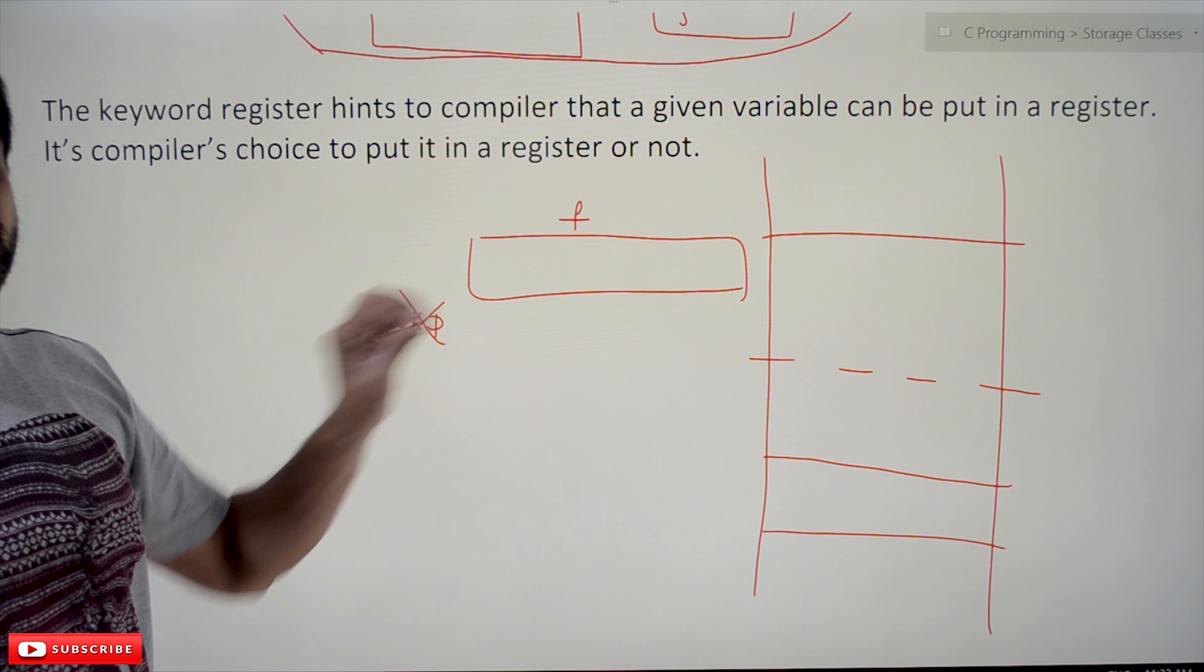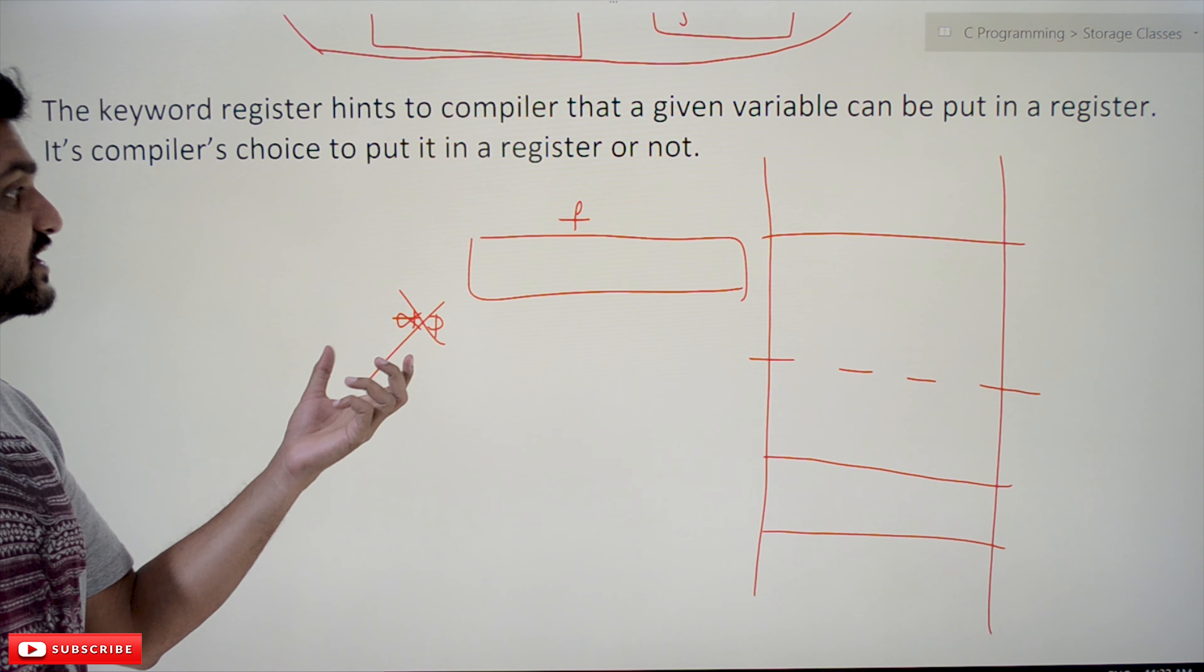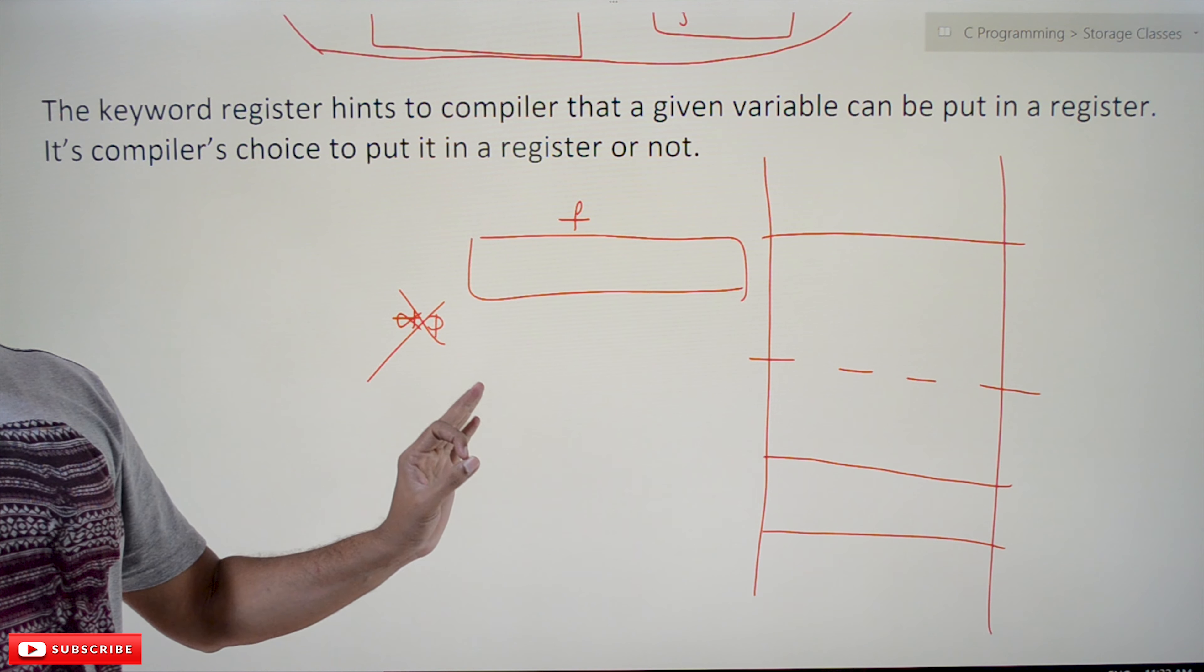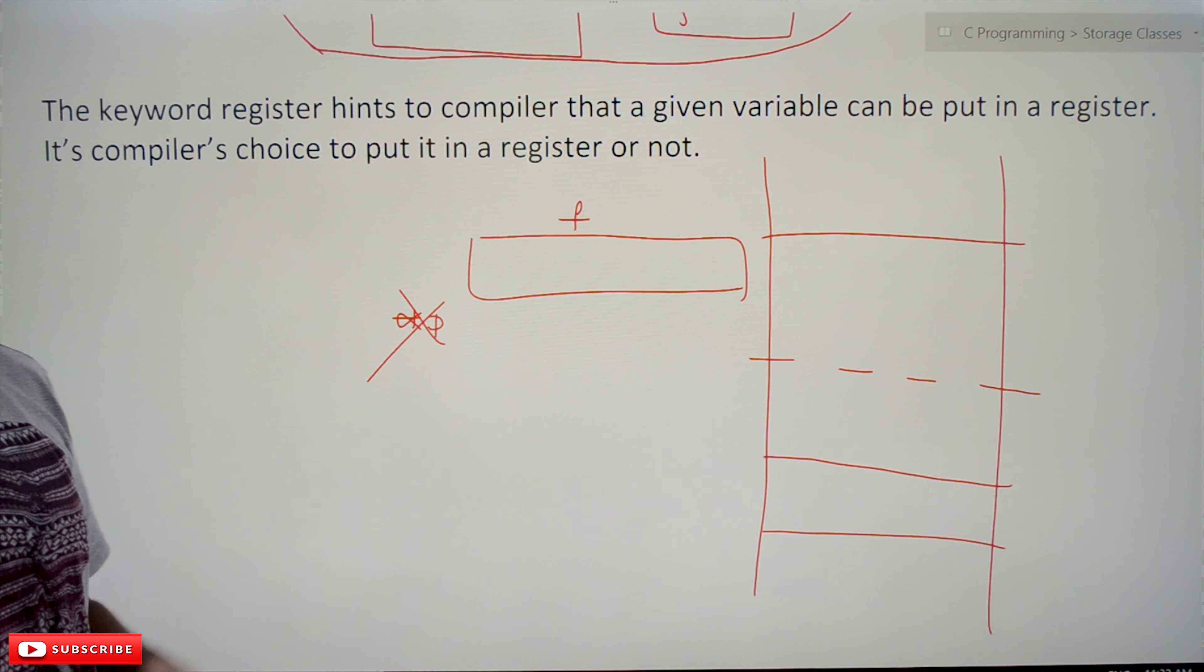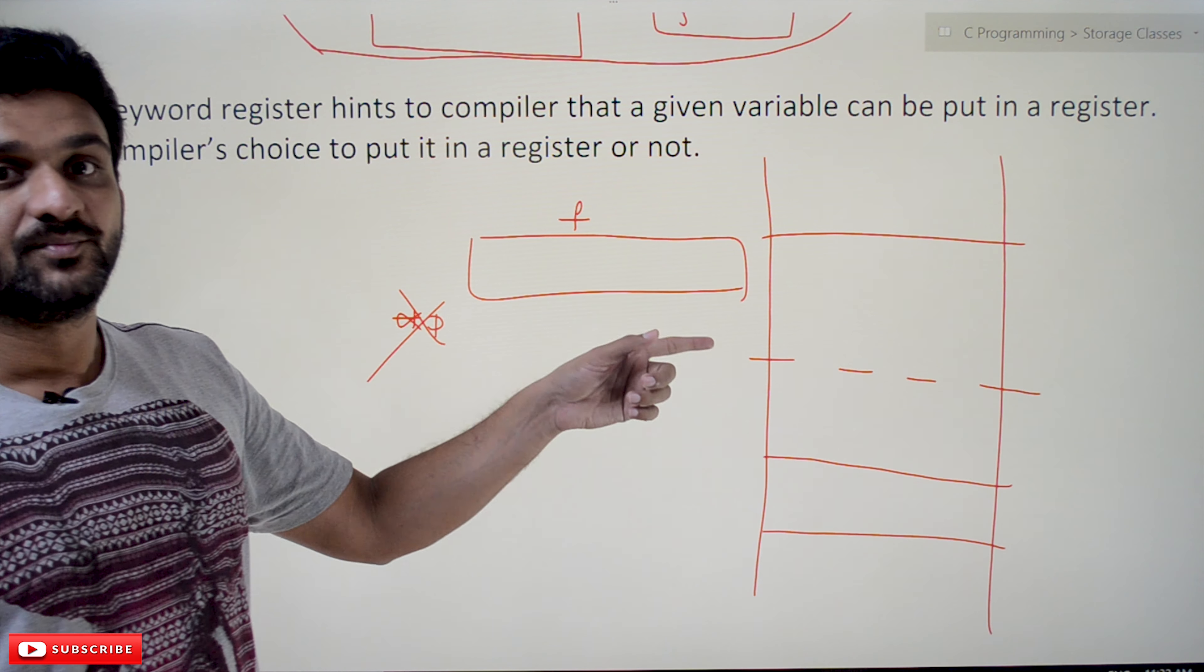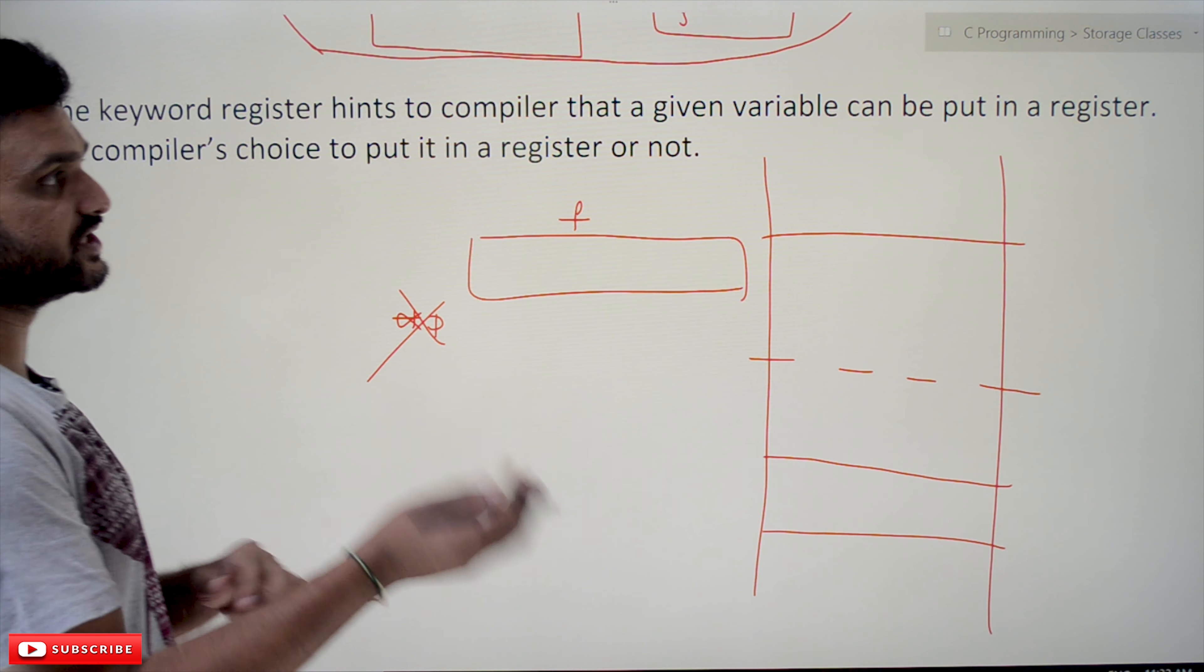If you want to give the pointer value for the register, it is also not accepted because the address of the register is not known. Address of the memory, yes it is known, so pointer for that variable is acceptable. These points are very important for you to make a note of. If you use it and it is not possible to store, it is your compiler fault, that machine fault.